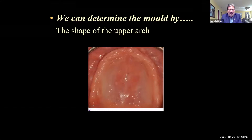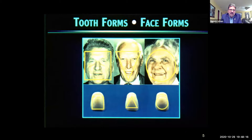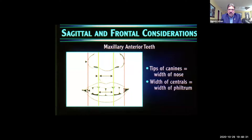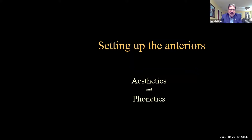We have to consider the width of the six anteriors, the shape of the central, and the shade. Sagittal and frontal considerations: the tips of the canines are usually equal to the width of the nose, and the widths of the centrals are equal to the width of the philtrum. We have all these anatomical landmarks to follow for something harmonious and aesthetic. We want to use a denture tooth that's functional and wears like natural dentition. For implant cases especially, implant denture teeth wear faster than those in an average full upper or lower denture. So we're looking for high mechanical strength, plaque resistance, tissue friendliness, and chip-free grinding — a tooth that's homogeneous throughout.